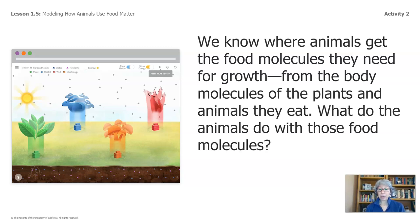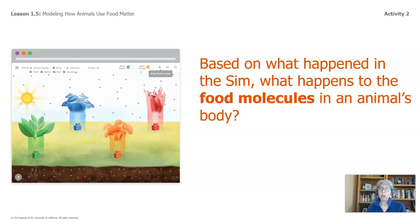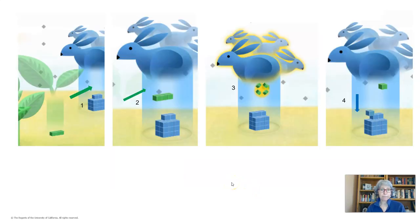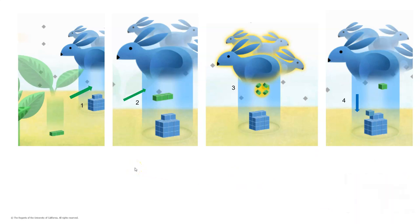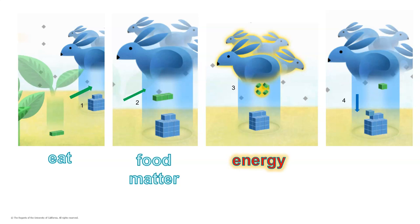What do the animals do with these food molecules? Based on what happened in the sim, what happens to the food molecules in an animal's body? As the rabbits eat the plants, they digest the plant matter as food. Food matter becomes energy and body matter. The rabbits use the energy to move and the body matter keeps the rabbits growing and thriving.